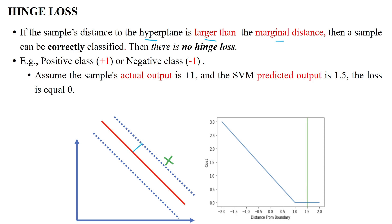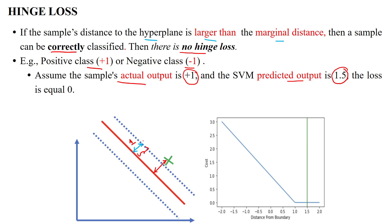When a sample's distance is more than the marginal distance, that sample is correctly classified and there is no hinge loss. For example, if the actual output is positive class and our SVM classifier predicts a value of 1.5, and the marginal distance between the hyperplane and the decision boundary is 1, then since the predicted value 1.5 is greater than 1, the hinge loss is equal to zero.